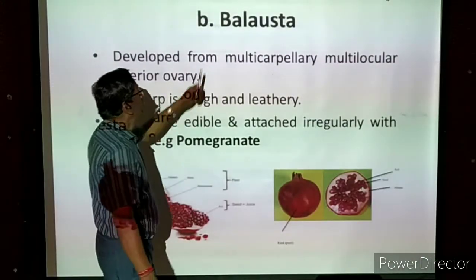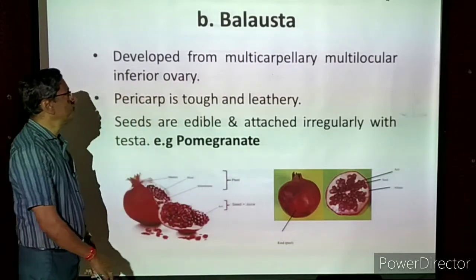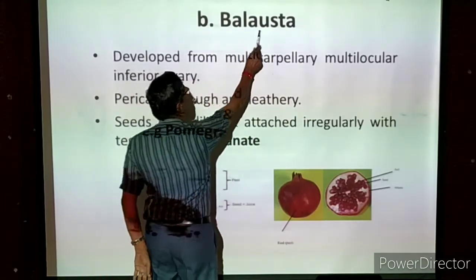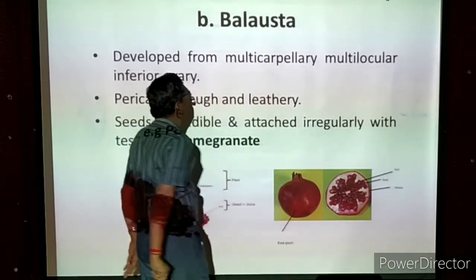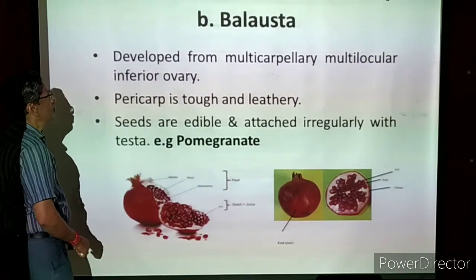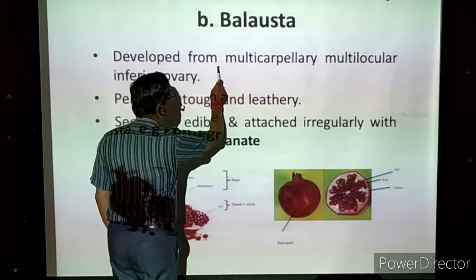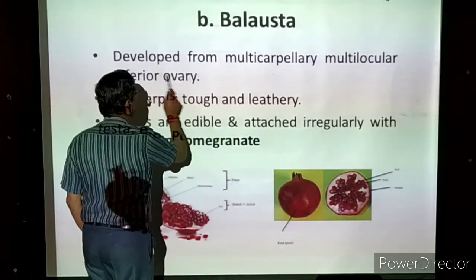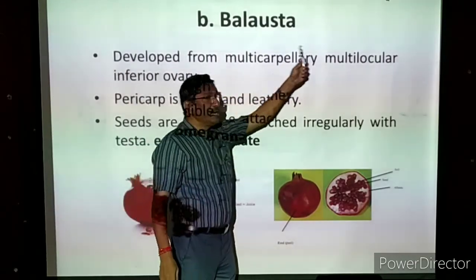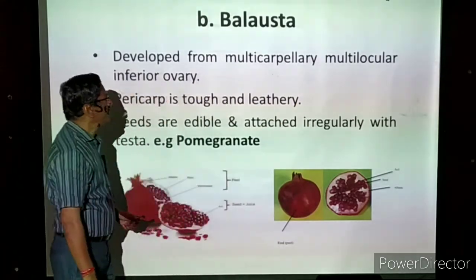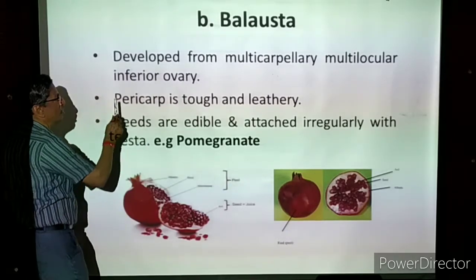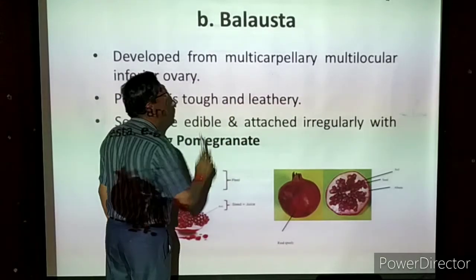Now we are coming to balausta — B-A-L-A-U-S-T. By seeing the picture you can say it is pomegranate. The balausta is developed from a multicarpellary, multilocular inferior ovary — many carpels are there with many locules or cavities present in the ovary, and the ovary is at the bottom with other parts above. The pericarp is tough and leathery.